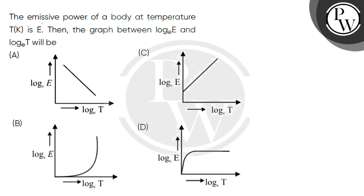Hello, let's read the question. The emissive power of a body at temperature T is E, then the graph between log of E to the base E and log of T to the base E will be.